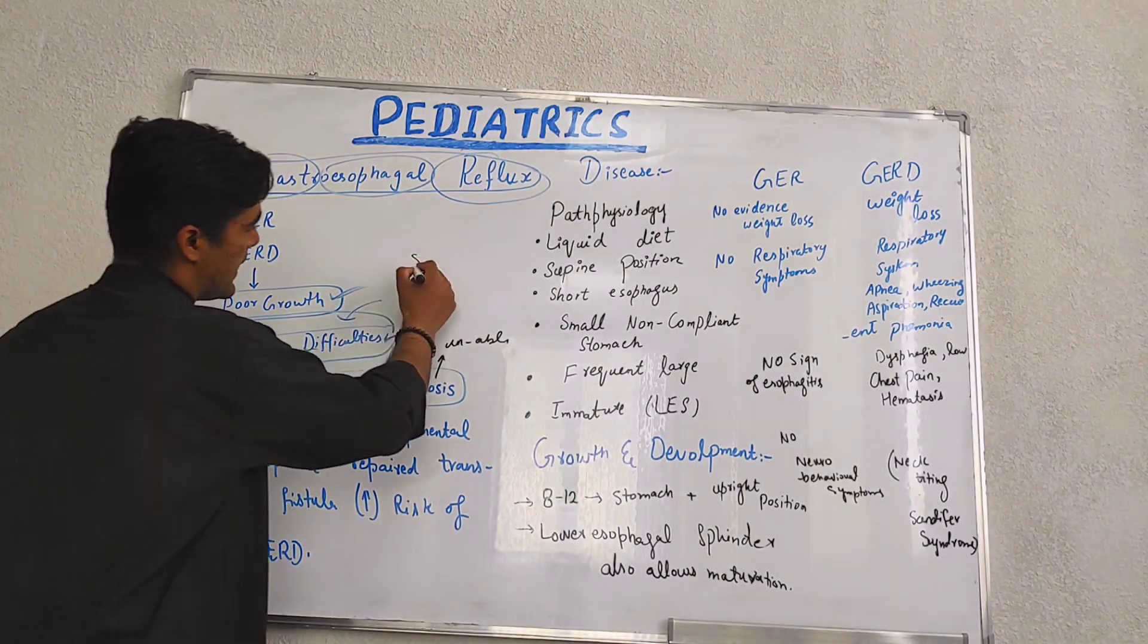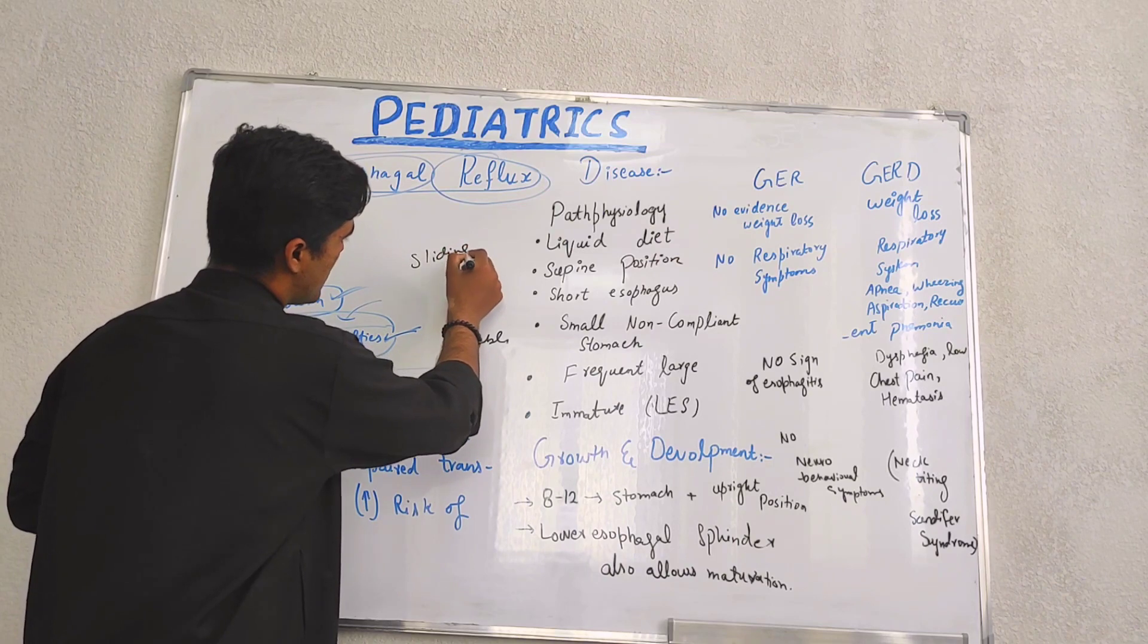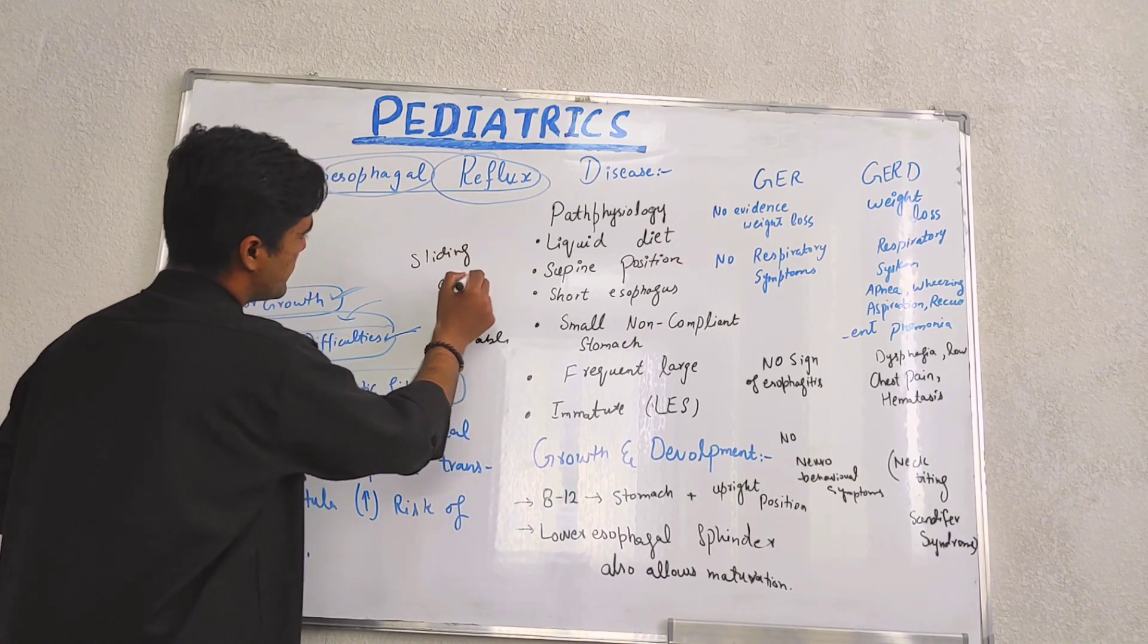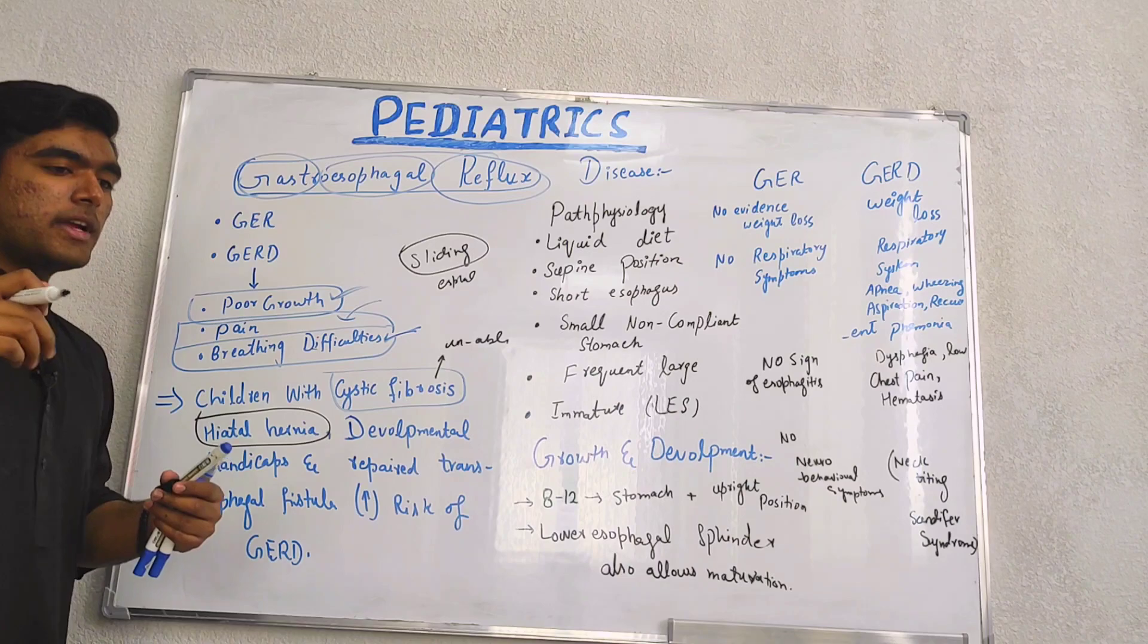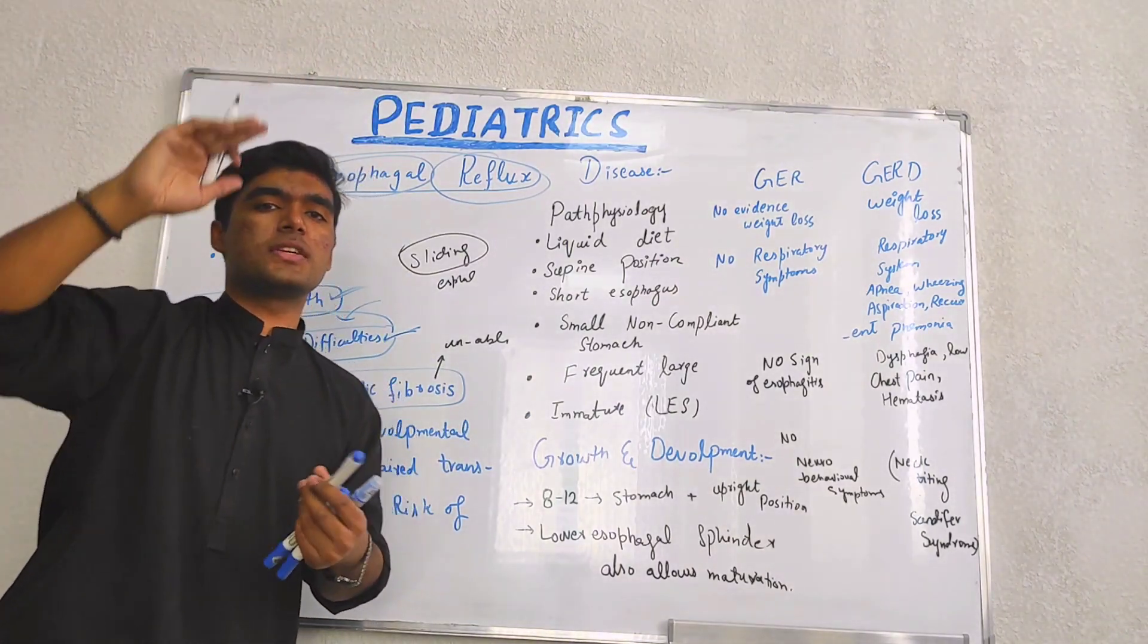Hiatal hernia has two forms: sliding and esophageal. In hiatal hernia, stomach and esophagus slide a bit and change their shape, so we say hernia develops.